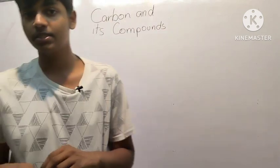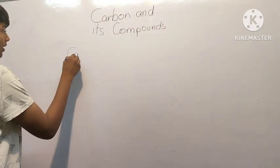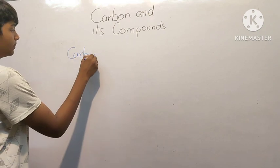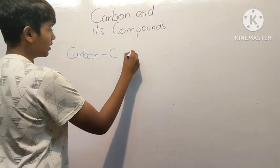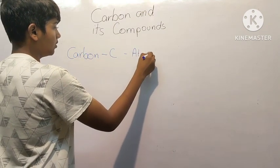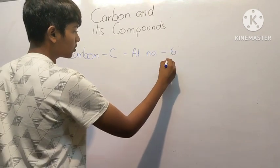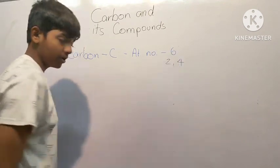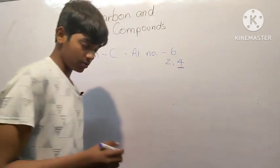Carbon is a non-metal with atomic number 6. It is represented as C, its atomic number is 6, hence its electronic configuration is 2, 4. You can see that it has 4 valence electrons.